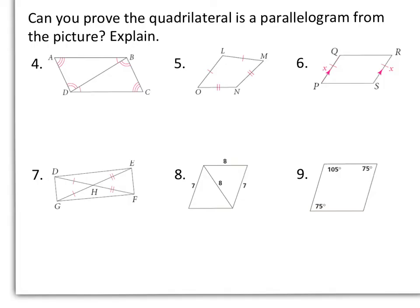In our last examples, we need to determine: can you prove the quadrilateral is a parallelogram from the picture? We're looking to see if we have enough information marked on our figure. In number 4, we have a bunch of angles marked congruent. We see that angle A and angle C are congruent, which tells us opposite angles are congruent. In the interior, we have alternate interior angles marked congruent. So in number 4, the answer is yes — we have enough information.